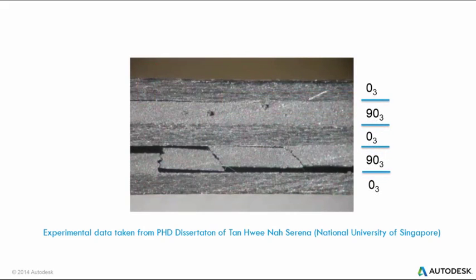Delamination creates separation between plies, which stops all load transfer between those plies affected. Load must travel to those plies through different mechanisms and load paths, which can significantly affect the failure mode of the composite structure.